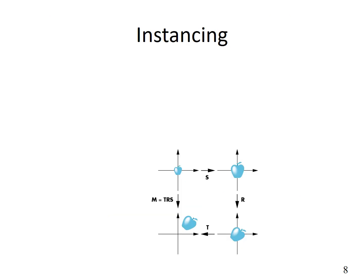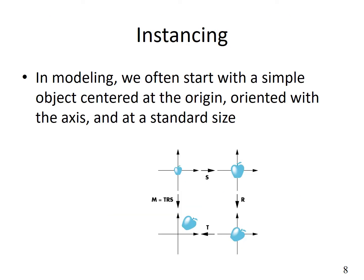Now let's look at instancing. In modeling, we often start with a simple object centered at the origin, oriented with the axis, and at a standard size. We may have a model of an apple with points defined around its center of gravity. The center of gravity is at the origin, and we have these points defined at a certain scale.